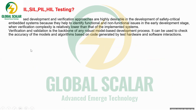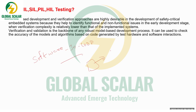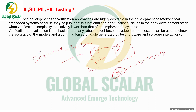SIL — Software in Loop — specifically considers only the software. Instead of flashing the software into the controller, we check the software modules with the help of the software itself. It is a kind of unit testing where we check the functionalities of the software at the software level.